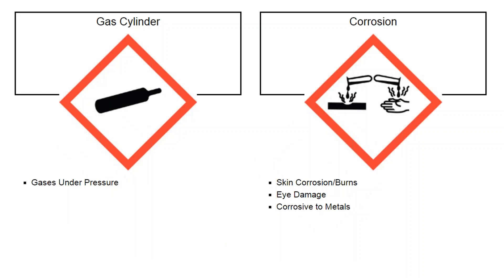The gas cylinder, or compressed gas symbol, is commonly found on propane cylinders and compressed canisters such as spray paint. The contents themselves may not be hazardous, but the potential rupture of a valve being knocked off creates a missile. The corrosion symbol is very apparent — chemicals like this cause corrosion and chemical burns, including skin corrosion and burns, eye damage, and corrosion to metals. Think what a leak could do to electrical wires or metal containers of other chemicals.